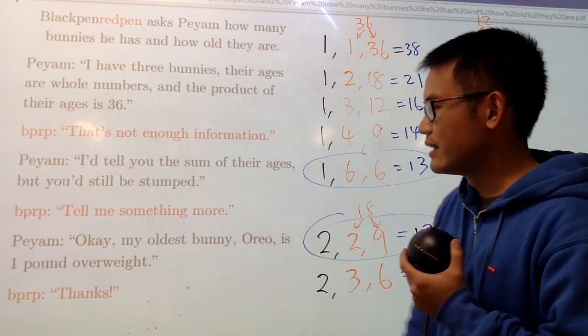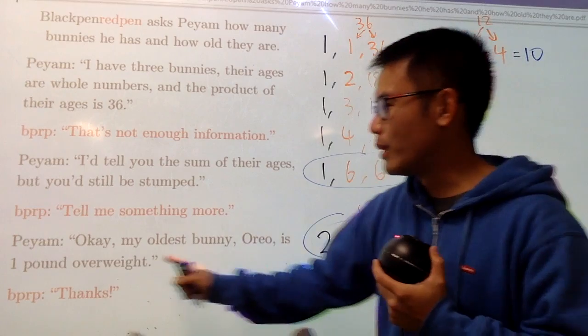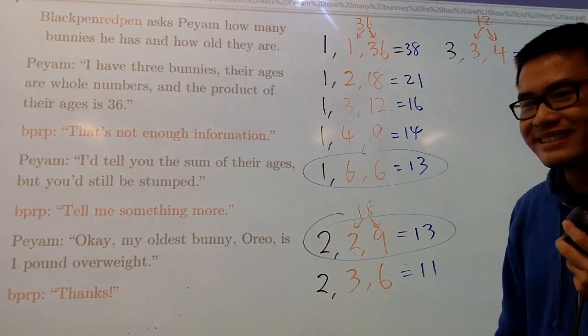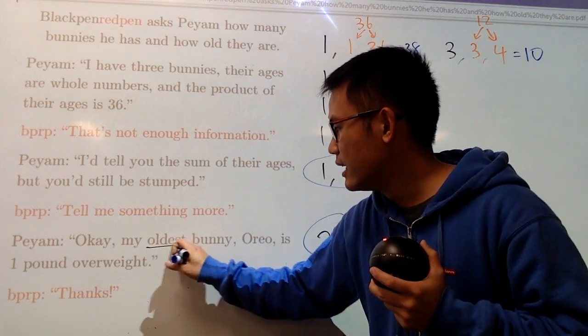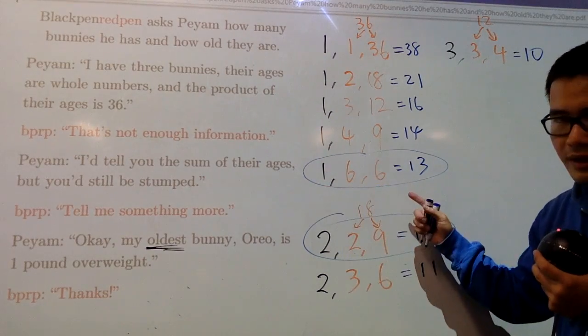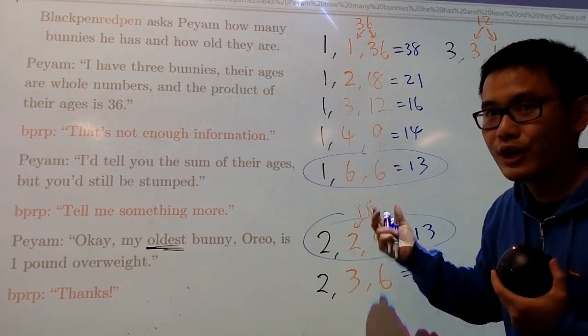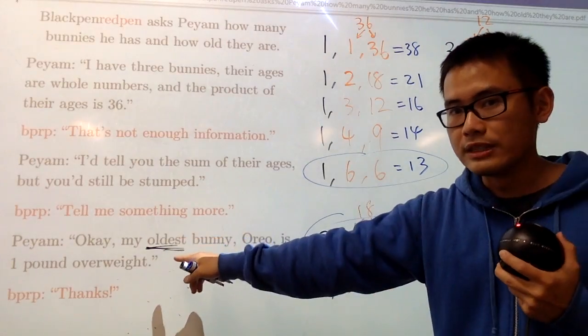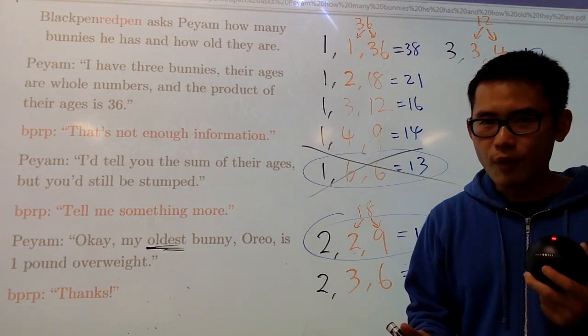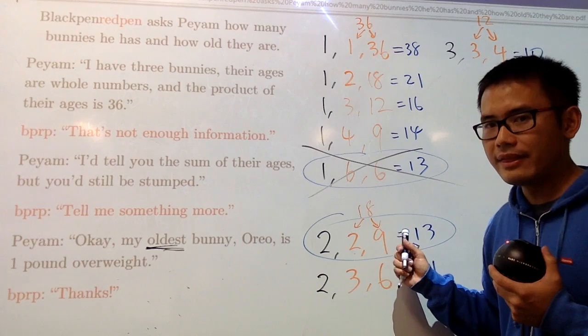Lastly, Payan says, okay, his oldest bunny, Oreo, is 1 pound overweight. What does the 1 pound overweight have to do with anything? No, he's just fat for the Oreo. But, he did mention that he has an oldest bunny. He has an oldest bunny. And if you look at this right here, which one is the oldest? No, you don't, because 6 and 6, they are the same age. In that case, you would not say you have an oldest bunny. So, you're going to get rid of that. You do have the oldest here. Therefore, as you can see, the ages of the bunnies are 2, 2, and 9.